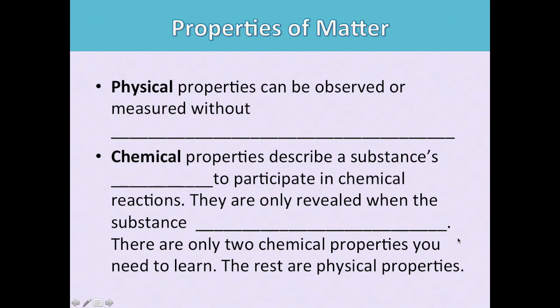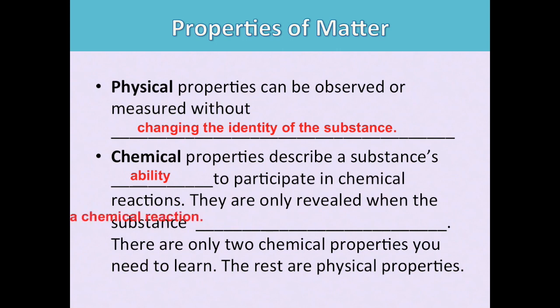Properties of matter are of two kinds. You can have physical properties, and these are properties that you can observe and measure without changing the identity of the substance. You can look at them and you won't change the thing. But chemical properties describe a substance's ability to participate in chemical reactions, so you're only going to see them if the thing is having a chemical reaction. There's only two chemical properties you need to learn: flammability and reactivity. Everything else is a physical property of matter.